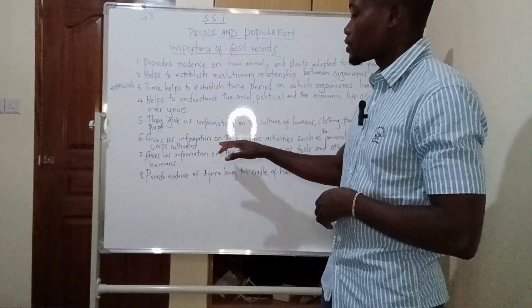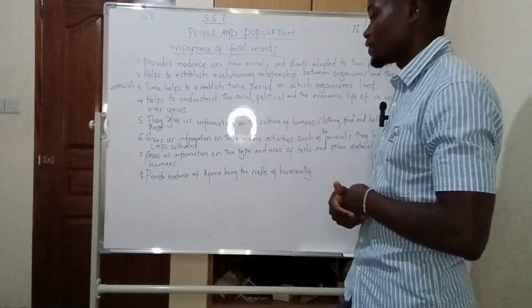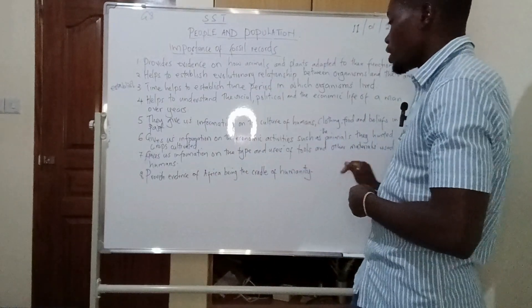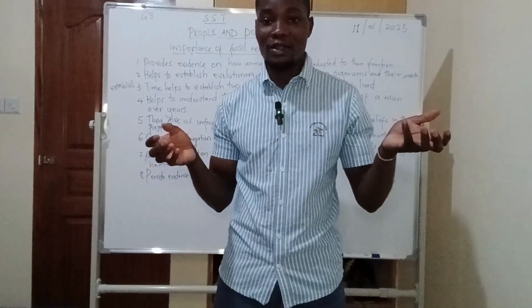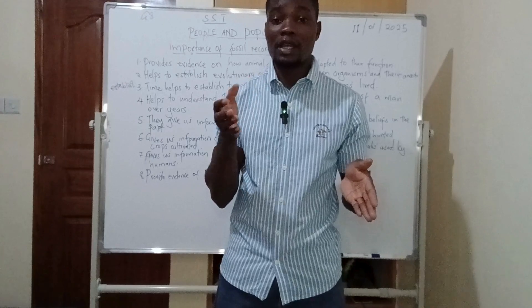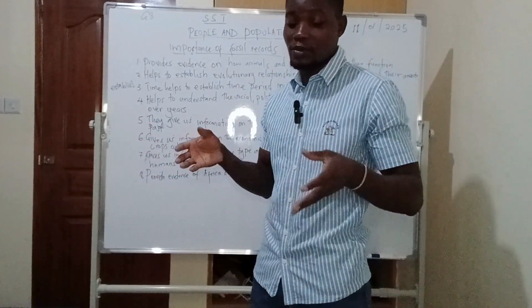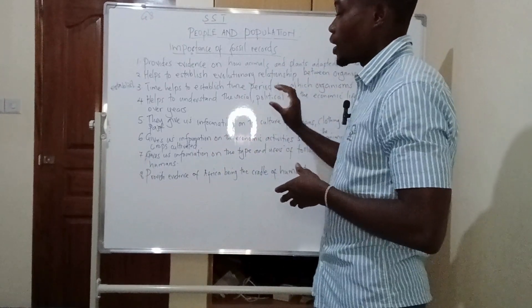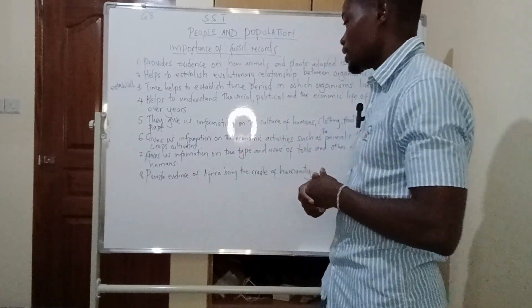Fossil records also give us information on economic activities, such as the animals they hunted, the crops they cultivated, or even fishing. Fossil records also give us information on the type and uses of tools and materials used by humans. For example, there's a discovery of Achillean tools. People used to use sticks, then moved to the discovery of iron and other things — making implements like hoes. We are only able to identify that through the study of fossil records.